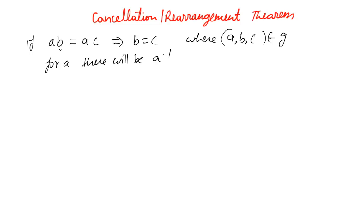Let's multiply both sides of this equation by A inverse. What do we get? We get A inverse AB equals A inverse AC, and because of associativity we can write this as A inverse A times B equals A inverse A times C. We know this is nothing but EB equals EC, where E is the unit element, and that gives us B equals C.